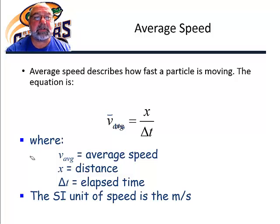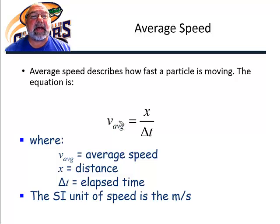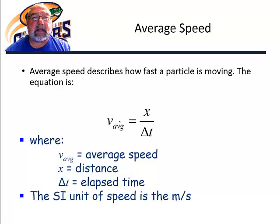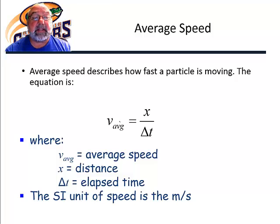That's just some notation if you happen to see it. The average stands for average speed, x stands for distance in this case, and delta t is the elapsed time. The SI unit for this is meters per second.